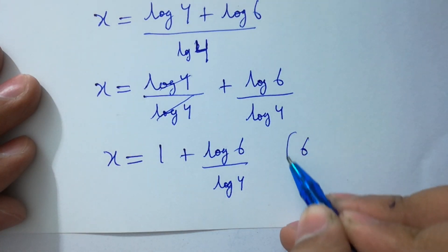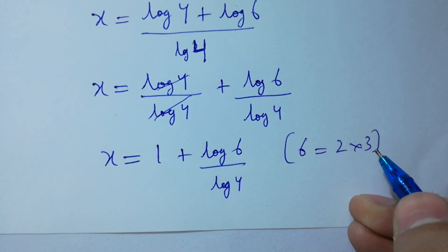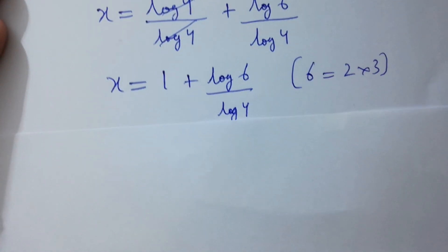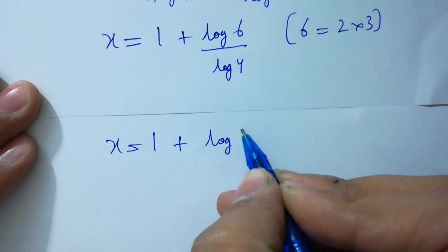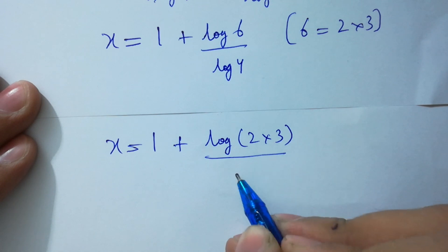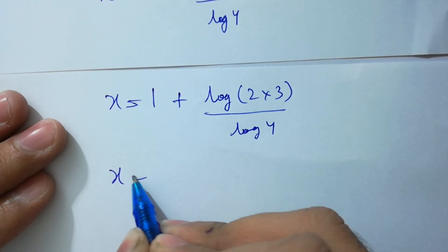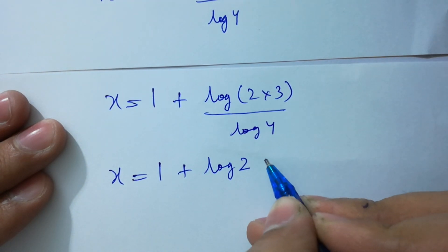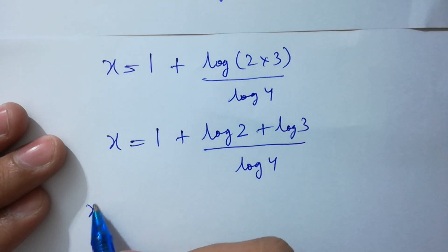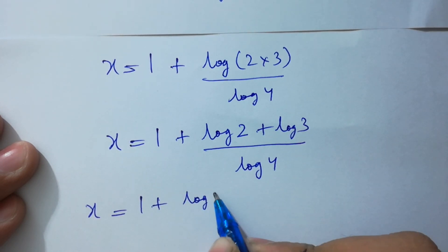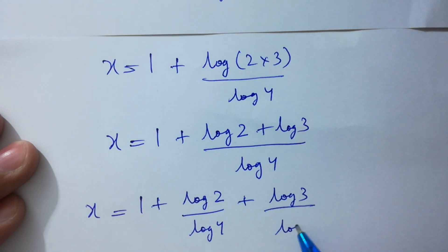Since 6 equals 2 times 3, so we have x equal to 1 plus log of 2 times 3 over log 4. In the next step, x equals 1 plus log 2 plus log 3 over log 4, which gives x equals 1 plus log 2 over log 4 plus log 3 over log 4.